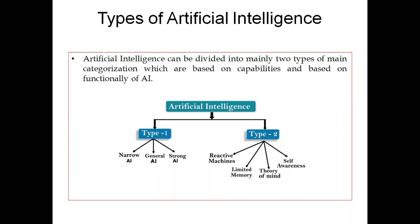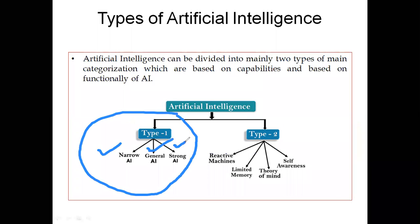Today we focused only on Type 1 AI, covering Narrow AI, General AI, and Strong AI. As a final question for this lecture, I want you to name one particular robot where scientists tried their best to impart emotions to some extent.